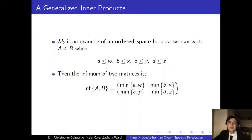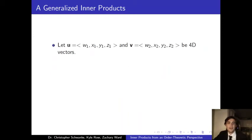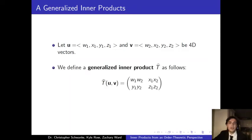Now lastly, we need to define two new vectors, U and V, such that they are 4D vectors. We can tell they are 4D because they have four variables, W, X, Y, and Z. Also, let's define a new generalized inner product, T hat, where we take in the two 4D vectors and we get a 2 by 2 matrix. This is extremely important to understand because we aren't getting a real number as an answer, like the first definition of an inner product.